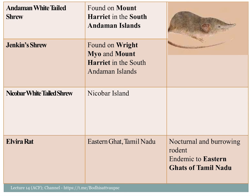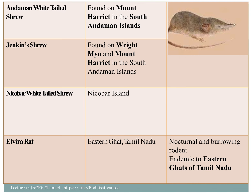There are white-tailed trees and islands. Elvira rats are found in the Eastern Ghats of Tamil Nadu. They have Elvira rats. This is the end of the Eastern Ghats region. The Elvira rats are a critically endangered species.